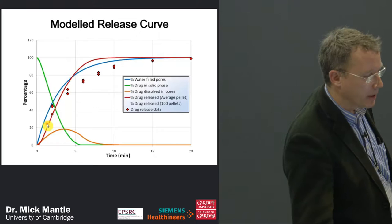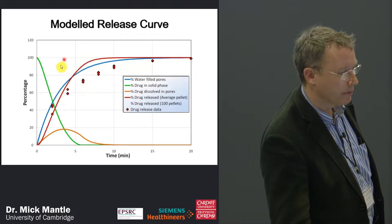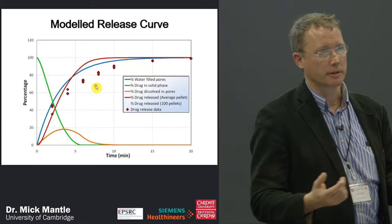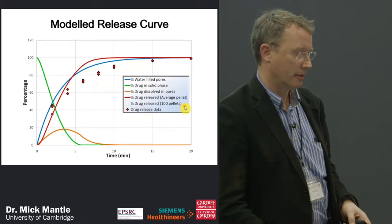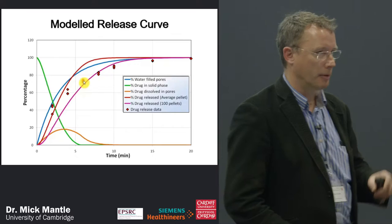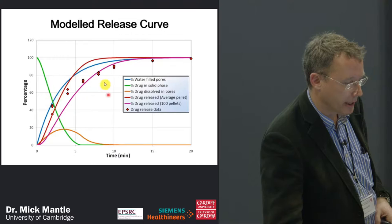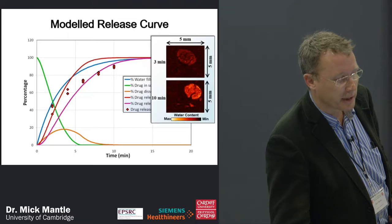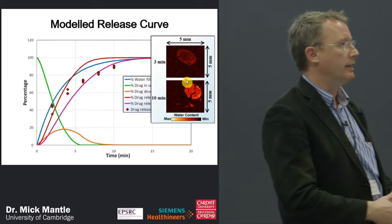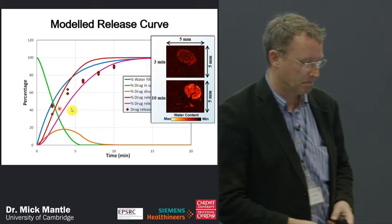For a single pellet, the model over-predicted the experimental data somewhat. James then introduced a stochastic model with around 100 pellets of different sizes, giving a much better fit from about 5 to 20 minutes — though still not perfect, with some under-prediction at early times. That's where MRI imaging came in: we imaged the pellets during dissolution and saw cracking occurring, which increases the surface area leading to a burst release of drug. That explained the discrepancy quite nicely.